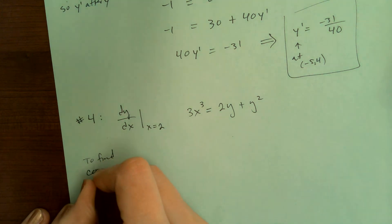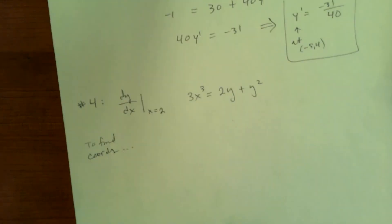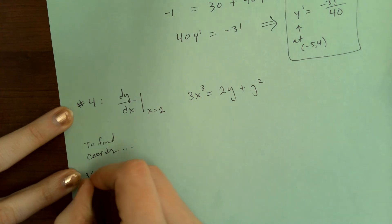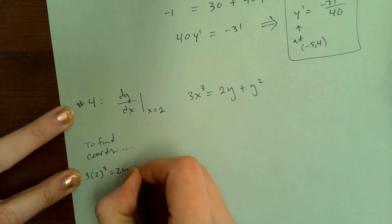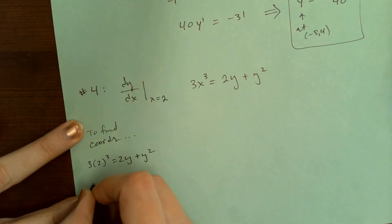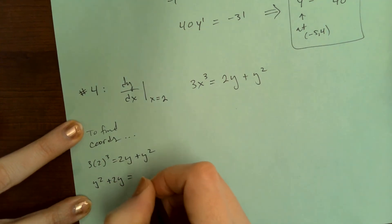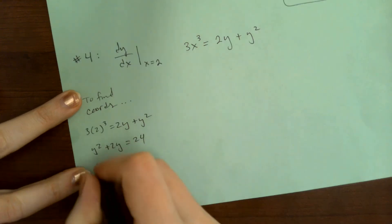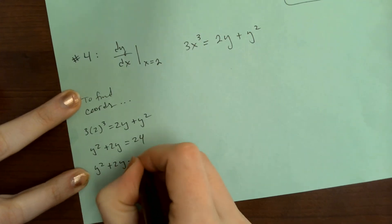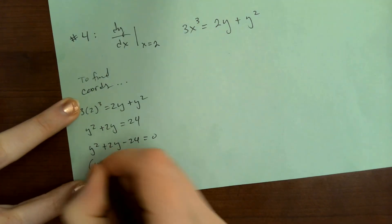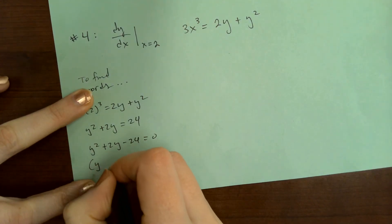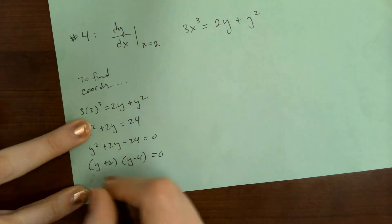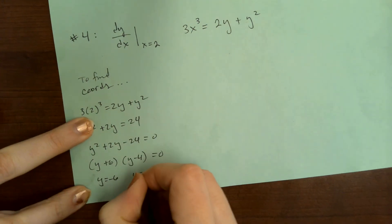To find the coordinates, we're going to plug two into this original equation. So this is going to be 3 times 2 to the third. This ends up being y squared plus 2y equals 24. That's a quadratic. Got to set it equal to 0. Y plus 6, y minus 4.